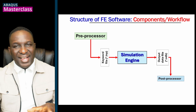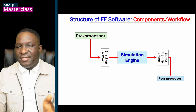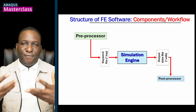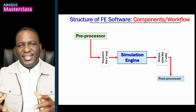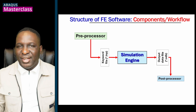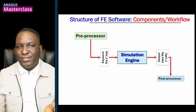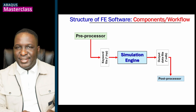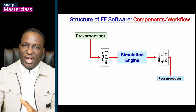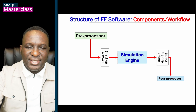From there, you pass that information into a post-processor. The post-processor is another platform that looks at this output database file and reformats it in a way that is visually appealing to the user — in the form of what we typically call a contour plot. So this is the workflow for every FE solver: from a pre-processor producing a keyword input file, to the simulation engine, an output file generated, and a post-processor that looks at that content.